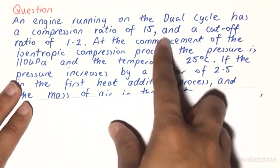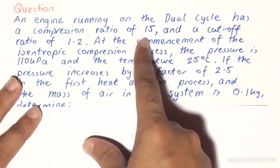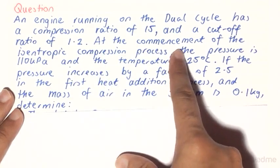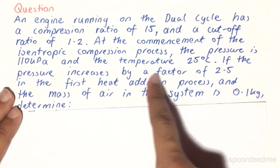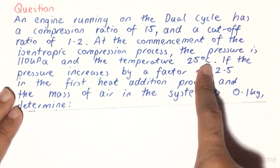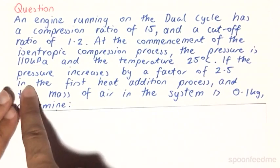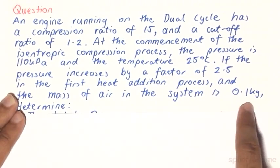An engine running on the dual cycle has a compression ratio of 15 and a cut-off ratio of 1.2. At the commencement of the isentropic compression process, the pressure is 110 kPa and the temperature is 25 degrees Celsius. So if the pressure increases by a factor of 2.5 in the first heat addition process and the mass of air in the system is 0.1 kg,